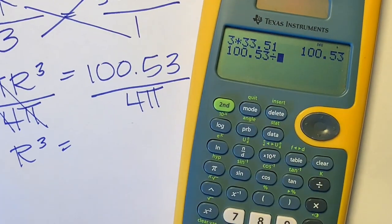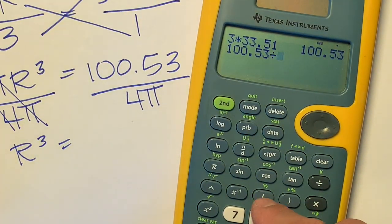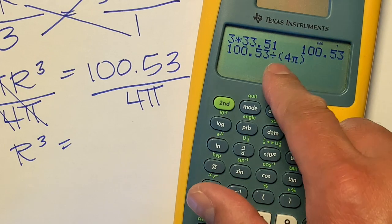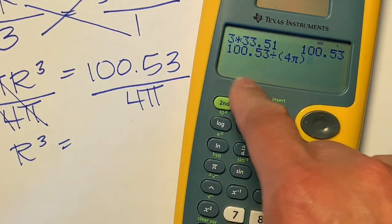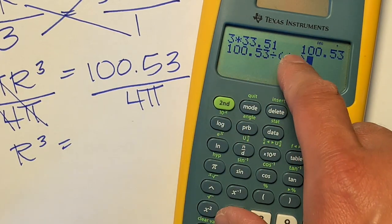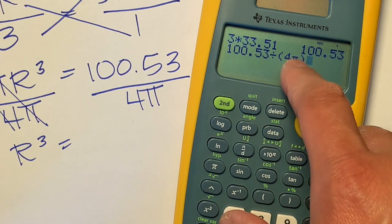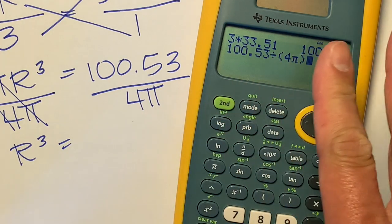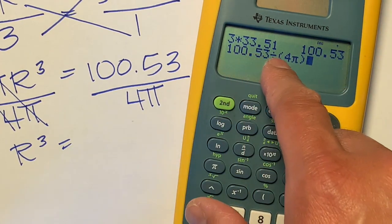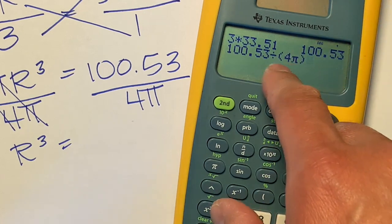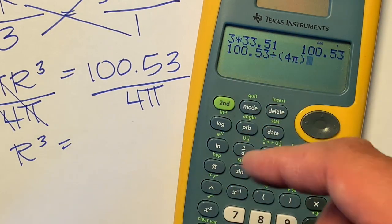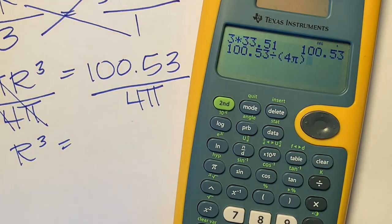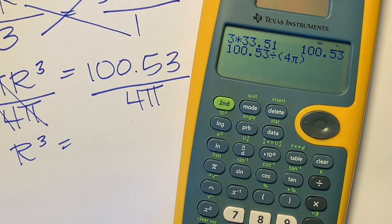And this is an important step: put a parenthesis here, then type the 4 and the π, and then close that parenthesis. You want this number to be divided by this product. If you don't put a parenthesis here and just put divided by 4π, you'll get a totally different answer because you'll divide by 4 and then multiply by π. This guarantees your order of operations. Press enter.